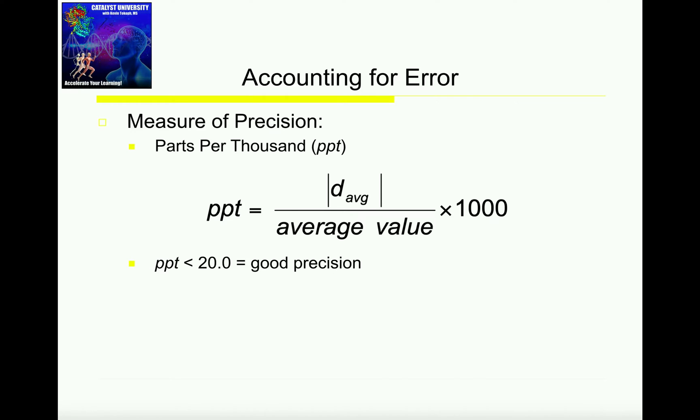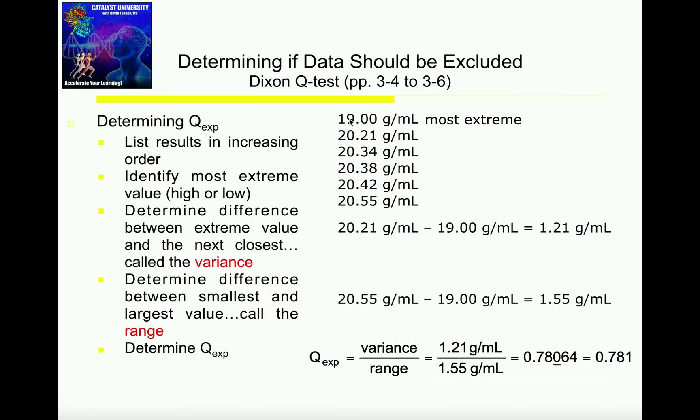Now, if we have not so good precision, it might result from an extreme value, which in statistics we might refer to as an outlier. So here's our data set: 19.00, 20.21, 20.34, 20.38, 20.42, and 20.55. And 19.00 appears to be an extreme value. All of these other numbers seem to cluster around 20.30, but 19.00 appears to be an outlier.